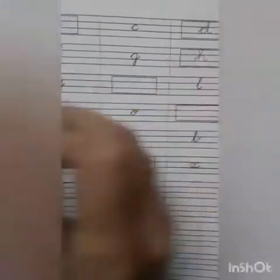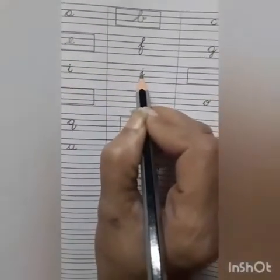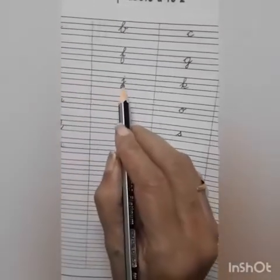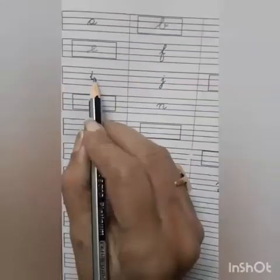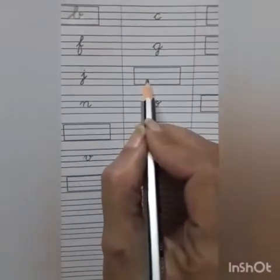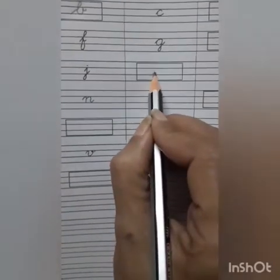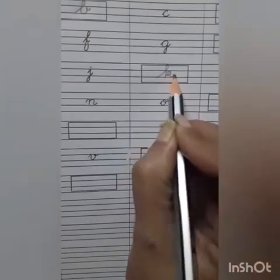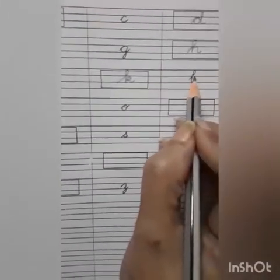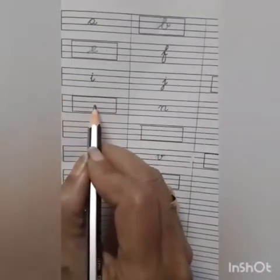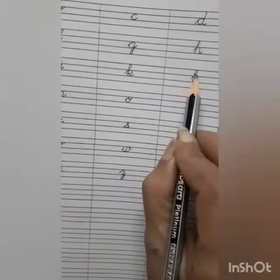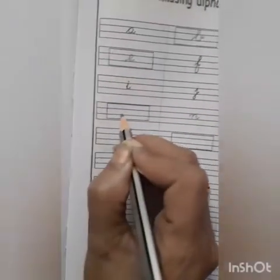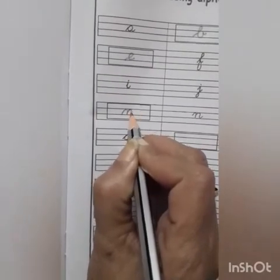H, I, J — then which alphabet is missing? I, J, K. So K is missing. Write K. Then K, L — which alphabet is missing? K, L, M. After L, M is missing. Write M.